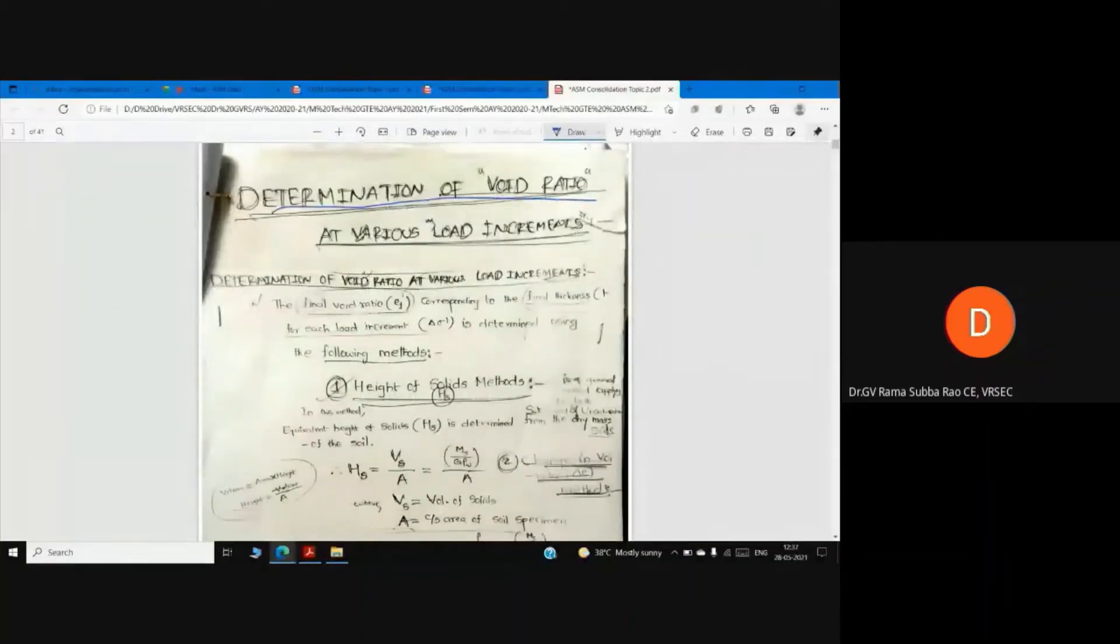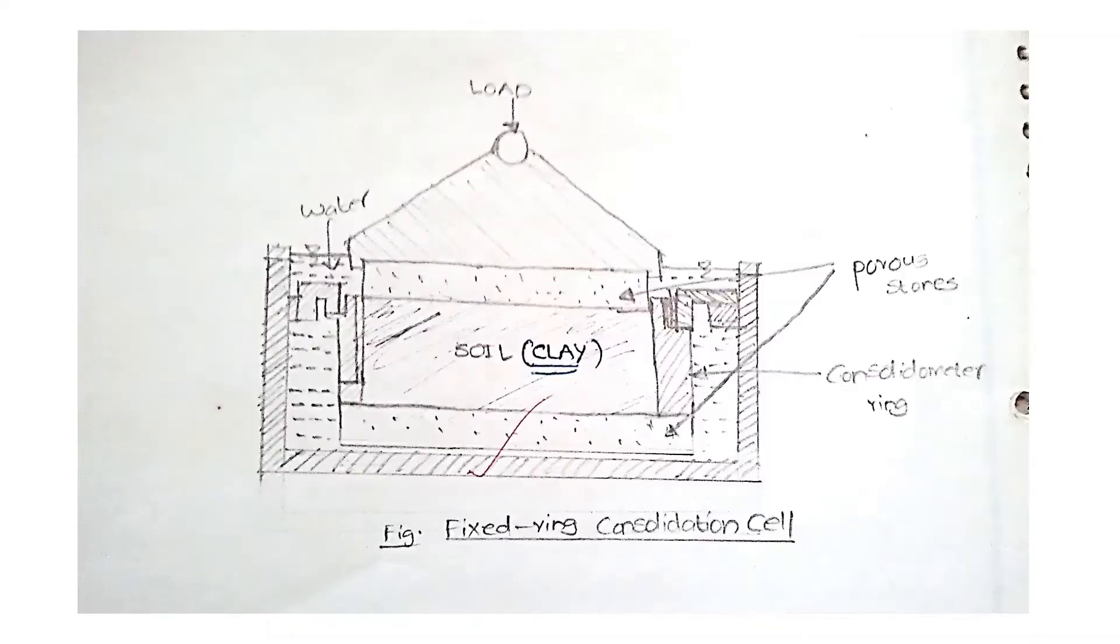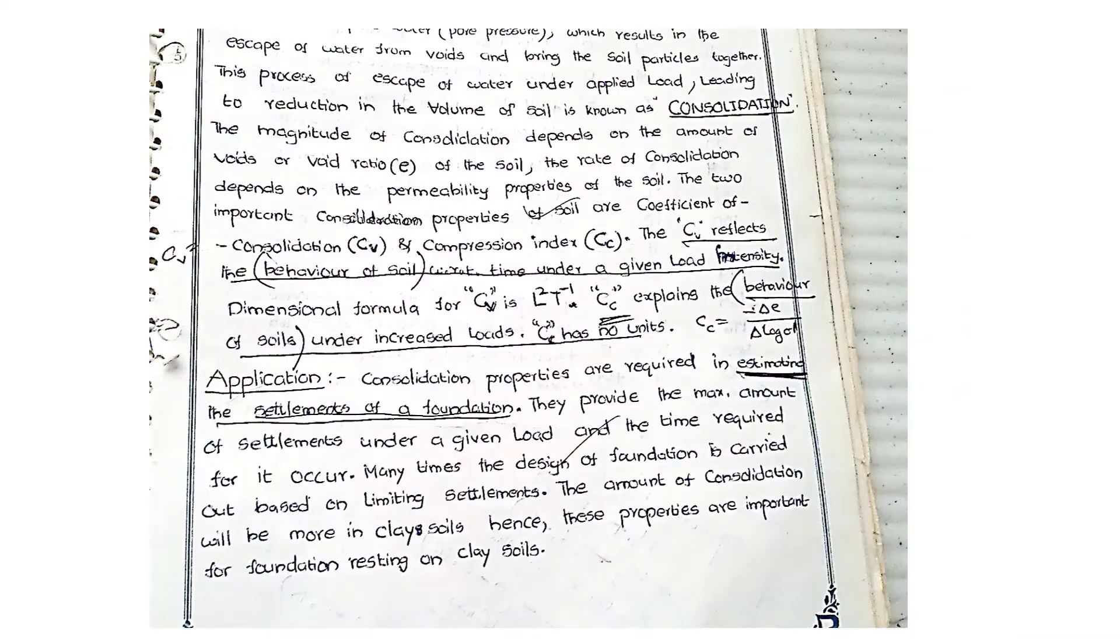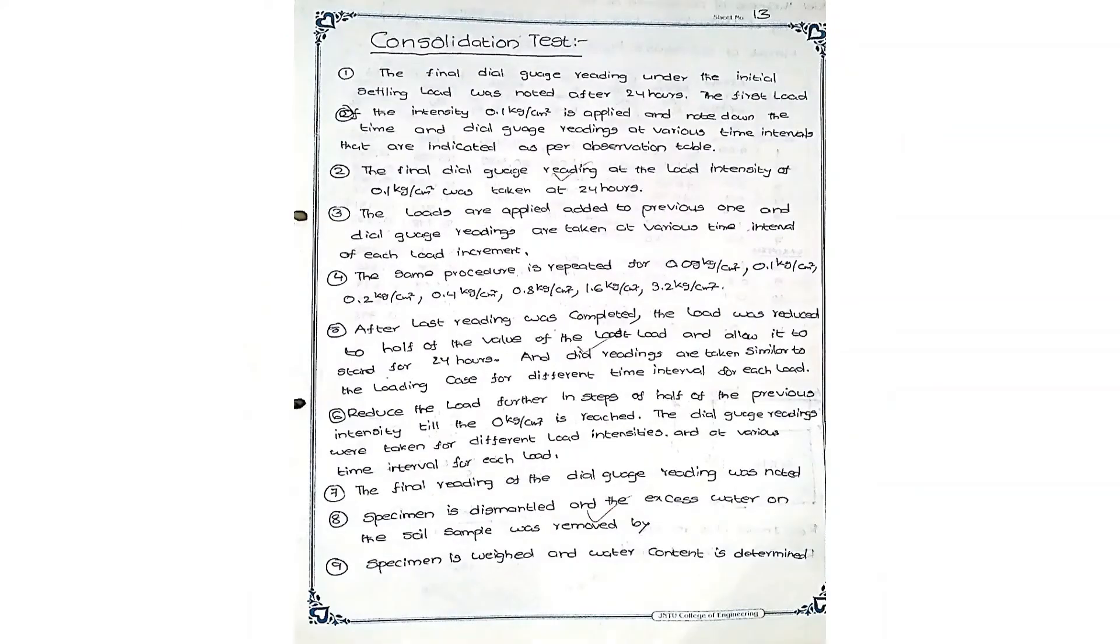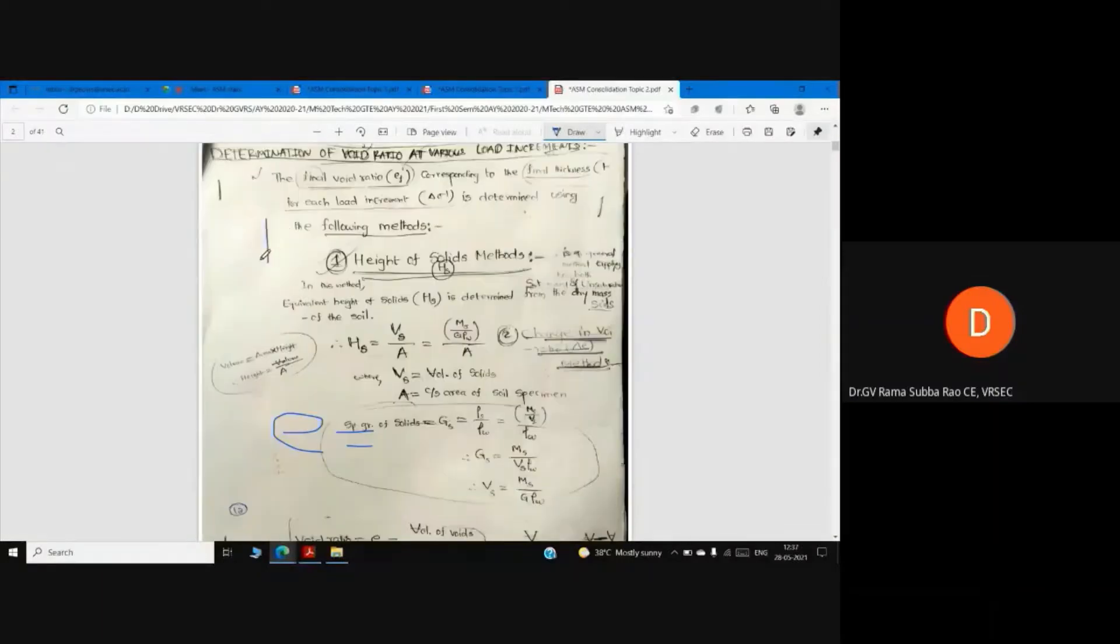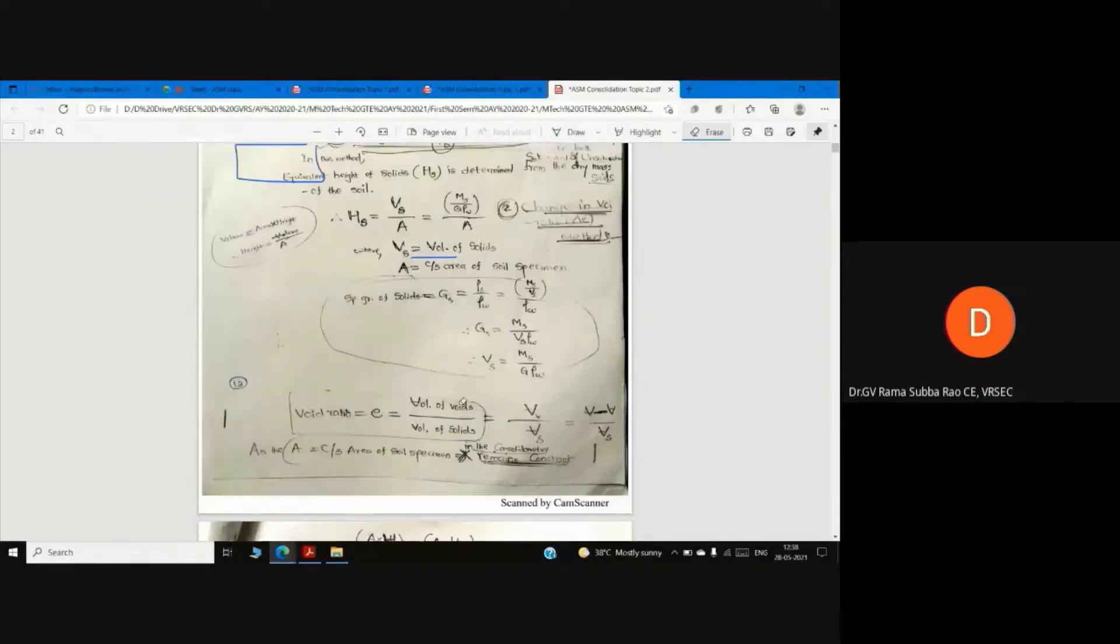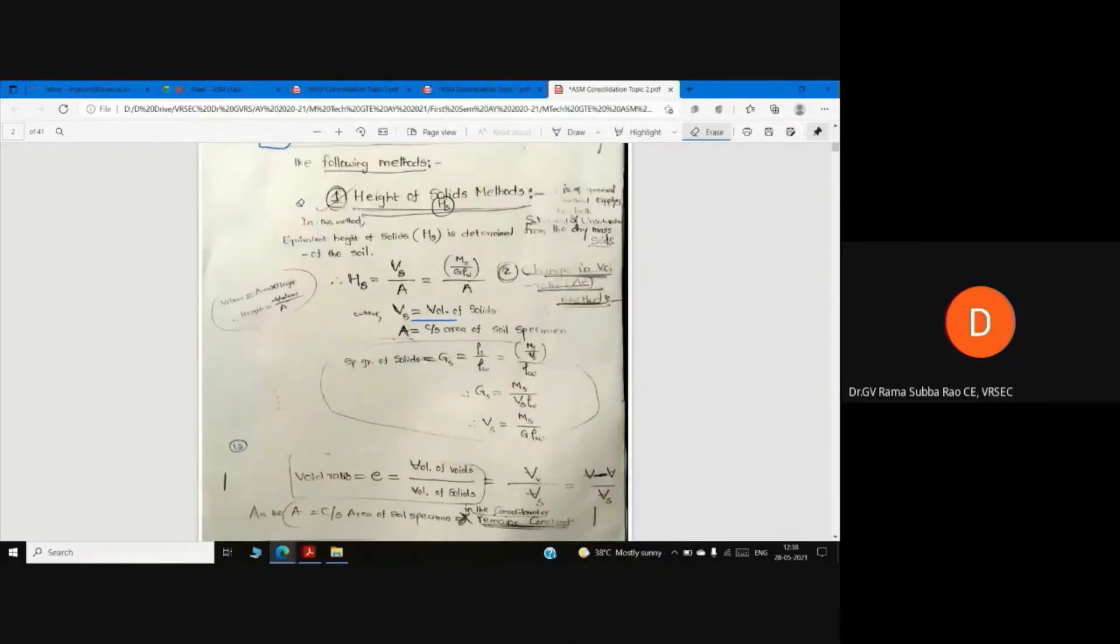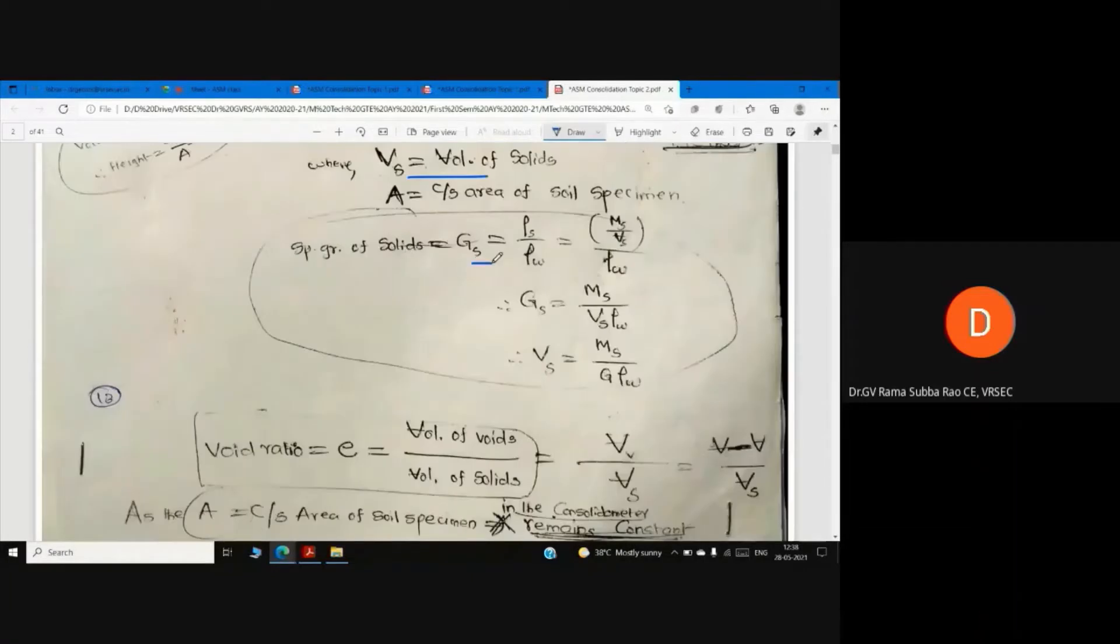Determination of void ratio at various load increments. When load is applied to soil, we are measuring the void ratio and height of solids using the method H minus Hs by Hs, which relates to specific gravity of solids.